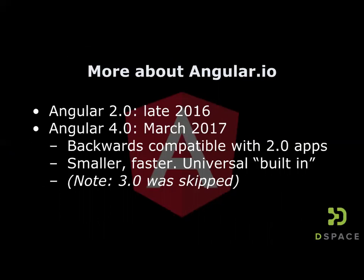A little more about Angular: when we were first doing the prototyping it was on Angular 2.0 in alpha. It moved into beta and released in late 2016, and as of now it's up to Angular 4—I think 4.3. They skipped 3.0 and went from 2 to 4, but it's all backwards compatible. Our codebase has now upgraded to the latest Angular 4.3. The 4.0 model is streamlined for speed and has Angular Universal built in, whereas it was separate in the 2.0 release.